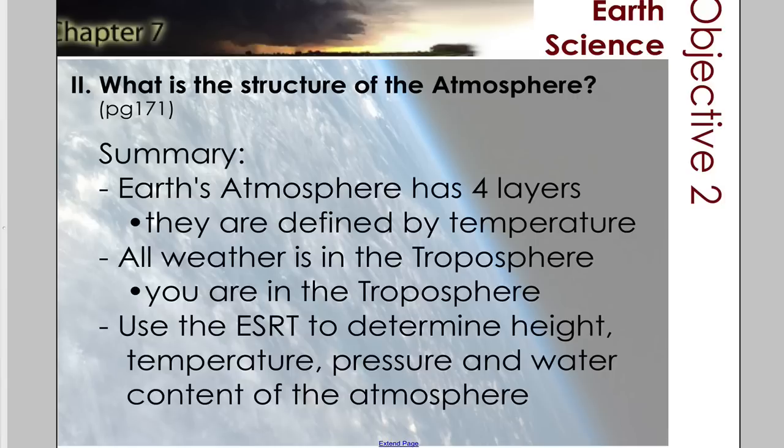So overall, Earth's atmosphere has four layers. Those layers are defined by differences in their temperature. All weather is found in the troposphere. We live in the troposphere. And use your reference tables to determine facts like height, temperature, pressure, and water content of the atmosphere.